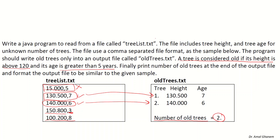We need to open treeless.txt for reading and oldtrees.txt for writing. We read data from the input file, and because we don't know the number of trees, we use a while loop while the input file has a next line. Since the file uses comma-separated format, we read line by line, get the first number as height and the second as age, then write the output to the other file.